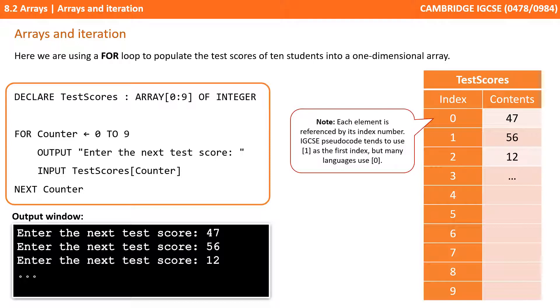A quick note: each element of the array is referenced by its index number. In the IGCSE pseudocode they will tend to use 1 as the first index, but many languages use 0 as the first index. So just be careful in the exam.